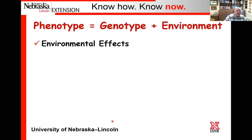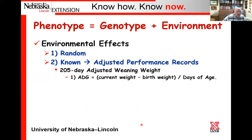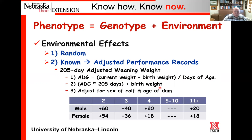A prime example is the 205-day adjusted weaning weight. To calculate it, we first calculate the average daily gain from birth to weaning: current weight minus birth weight divided by days of age. Then we adjust to a 205-day standard by taking that average daily gain times 205 days and adding back in the birth weight. Finally, there is one additional adjustment for sex of the calf and age of the dam, which are known environmental effects.